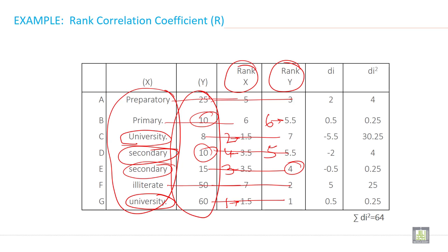Now what's next? Find the difference between these two ranks. Five minus three is two, six minus 5.5 is 0.5, and so on. And then find the square: two into two is four, 0.5 into 0.5 is 0.25, and so on. And add all this. At the end you will find d square as 64.